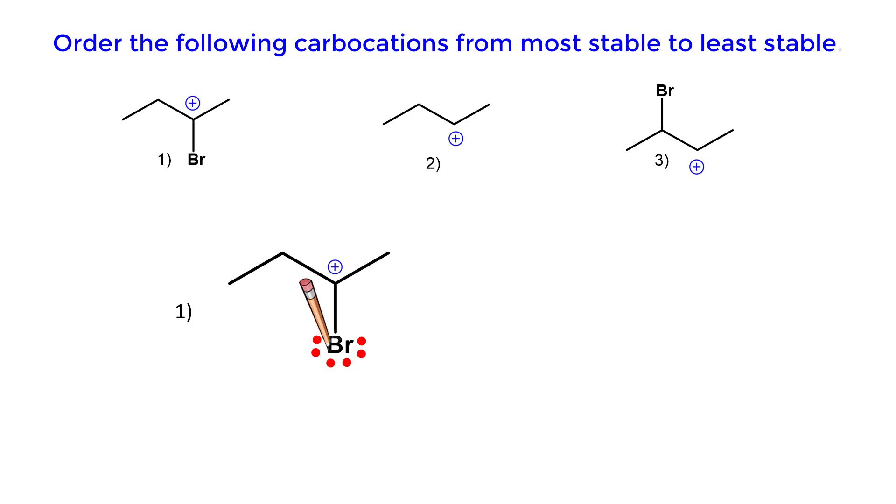The lone pair of electrons on the halogen can be delocalized, and this puts a positive charge on the bromine atom.